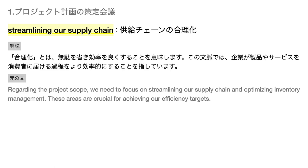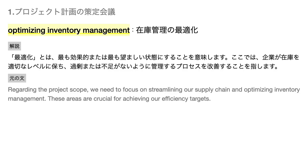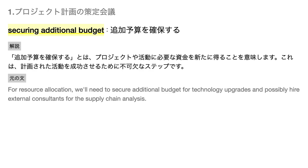Streamlining our supply chain — 合理化 — とは、無駄を省き効率を良くすることを意味します。この文脈では、企業が製品やサービスを消費者に届ける過程をより効率的にすることを指しています。Optimizing inventory management — 最適化 — とは、最も効果的または最も望ましい状態にすることを意味します。ここでは、企業が在庫を適切なレベルに保ち、過剰または不足がないように管理するプロセスを改善することを指します。Securing additional budget — 追加予算を確保する — とは、プロジェクトや活動に必要な資金を新たに得ることを意味します。これは、計画された活動を成功させるために不可欠なステップです。